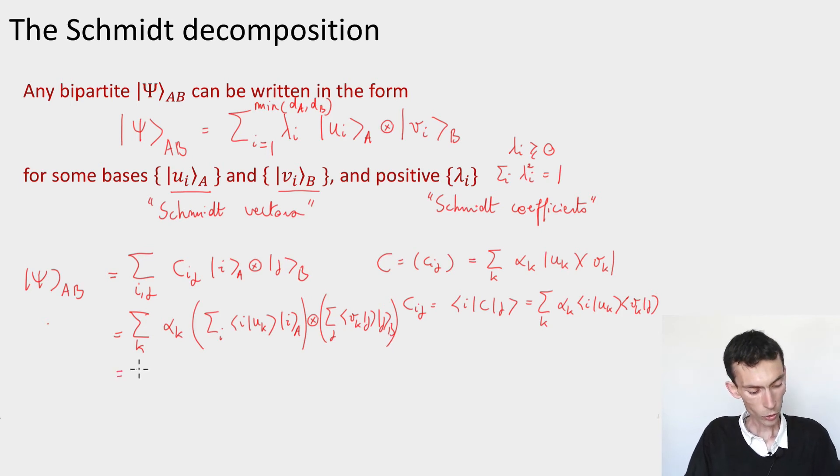What is this? It's just the sum over k of alpha k. What is the first term here? That's just exactly the vector uk. The second term, it's a bit different because we have the inner product taken in the opposite direction. So I have to take a complex conjugate and this will be the complex conjugate of the vector vk. Call it vk star. And here I am.